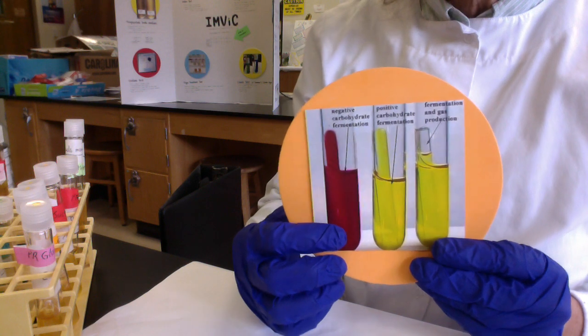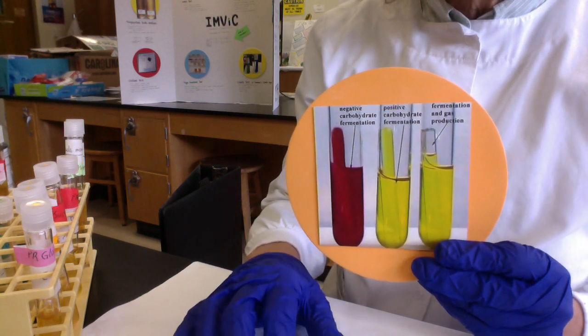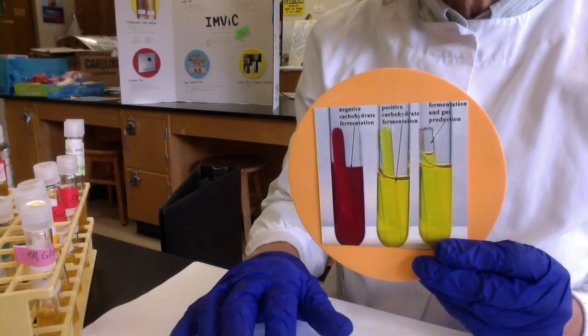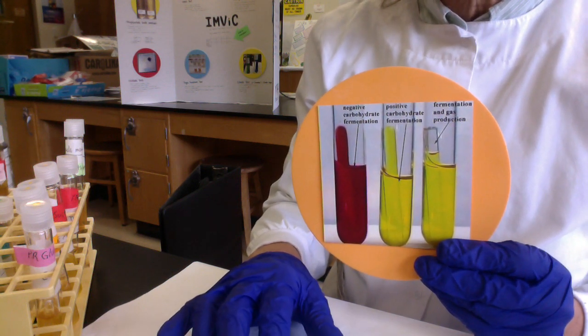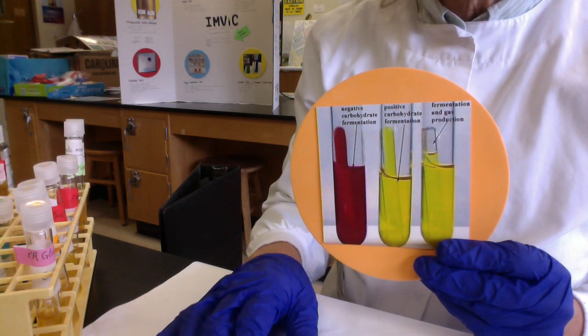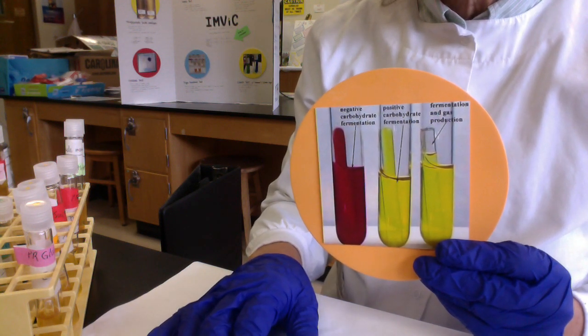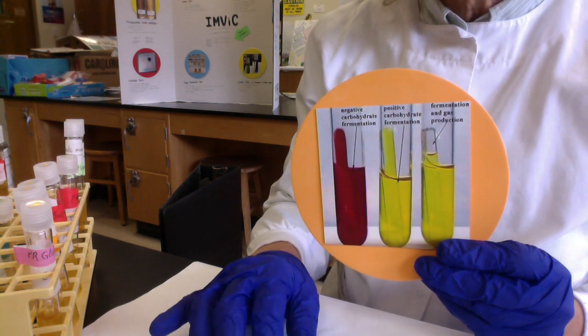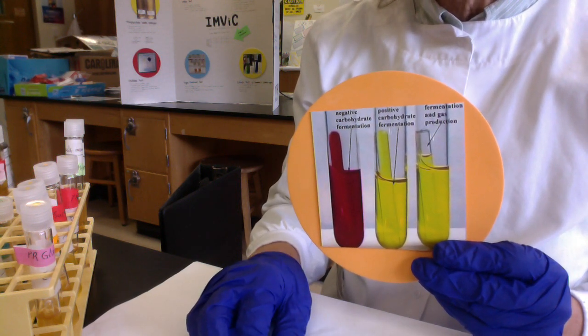We can make sugar fermentation fingerprints. Different microbes have different fermentation patterns. Some microbes may not ferment sugars at all. Some may only ferment glucose but not sucrose or lactose. We can come up with a metabolic fingerprint.